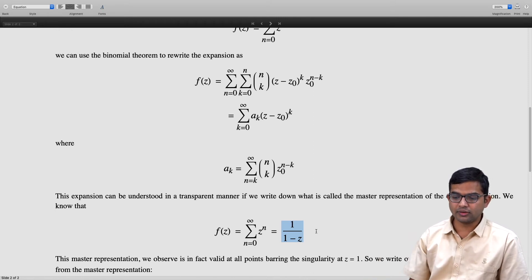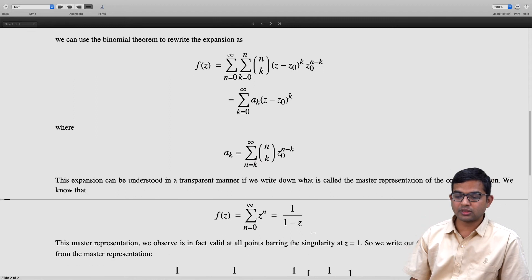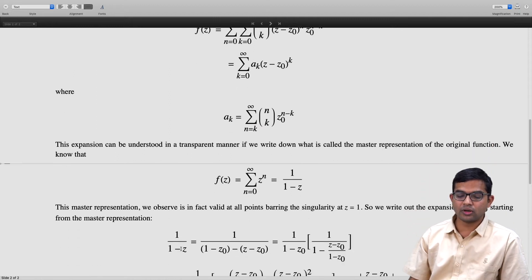We can in fact use this to come up with a Taylor expansion about some other point z₀. This aₖ we can work out by rewriting 1/(1-z) as 1/(1-z₀-(z-z₀)). We artificially put this z₀ in here and then we pull out 1/(1-z₀).